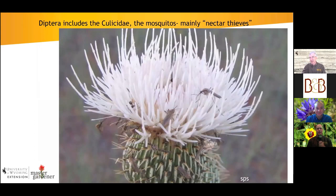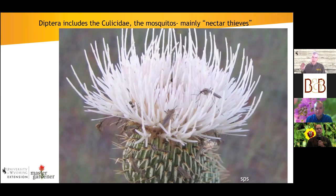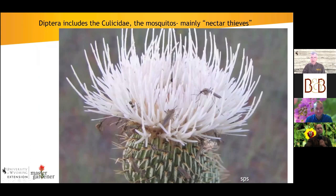Diptera also includes mosquitoes. Female mosquitoes require blood meals to produce eggs, but both males and females feed on nectar as an energy source. They're not considered very effective pollinators based on their behavior — they don't reliably revisit flowers of the same species to transfer pollen. Here's a native thistle just covered with mosquitoes; there wasn't much else blooming that year on the prairie for them to feed on.